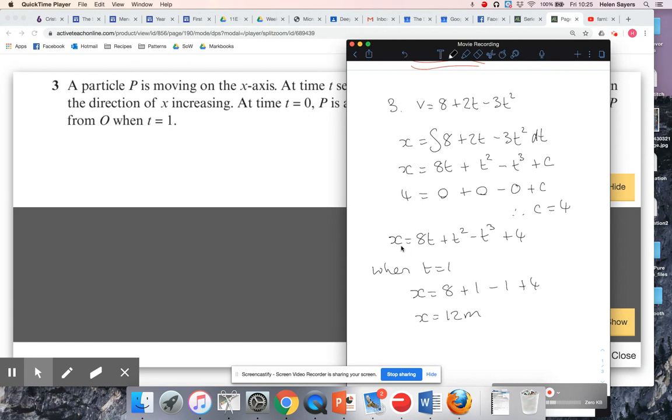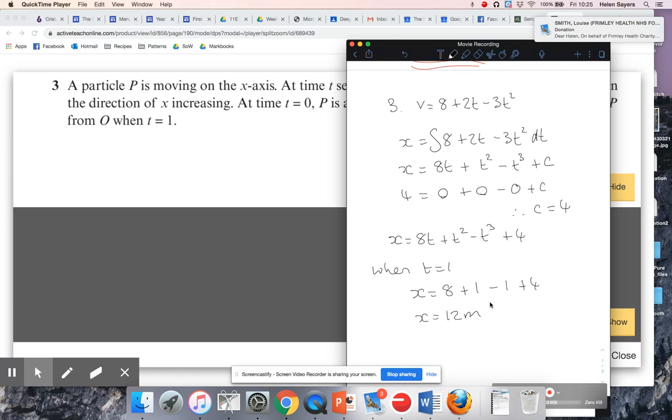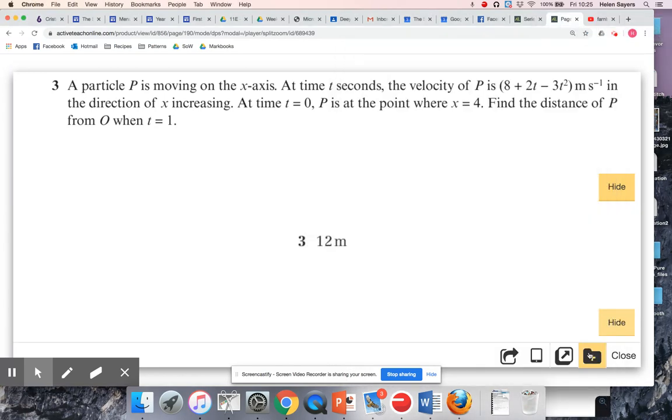So all I've done there, so that was my full equation for the distance X, so I've substituted T is one into that, and that's given me a final answer of 12, and they did tell me that T was in meters per second, and T was in seconds, so I do know that's going to be in meters. Okay, so let's just double check that. Brilliant.